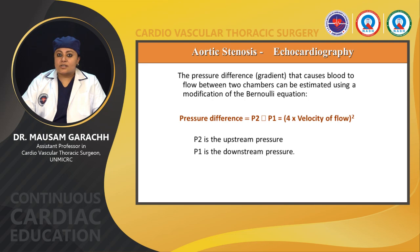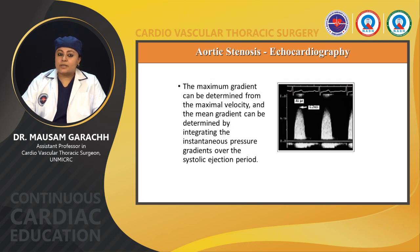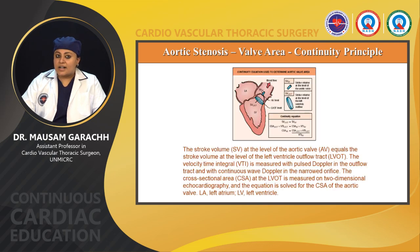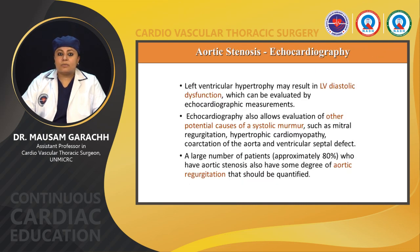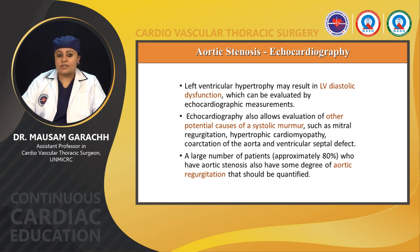The pressure difference causing blood flow between chambers can be estimated using the modified Bernoulli equation. The maximum gradient is determined from maximal velocity, and the mean gradient by integrating instantaneous pressure gradients over the systolic ejection period. Aortic valve area is calculated on the basis of the continuity principle. LV hypertrophy may result in LV diastolic dysfunction, which can be evaluated by echocardiographic measurements. Approximately 80% of patients with aortic stenosis also have some degree of aortic regurgitation that should be quantified.